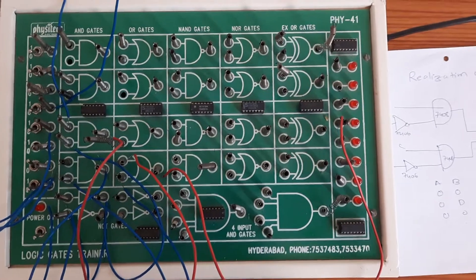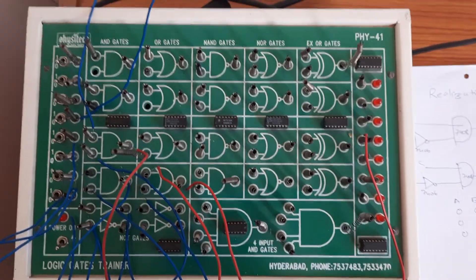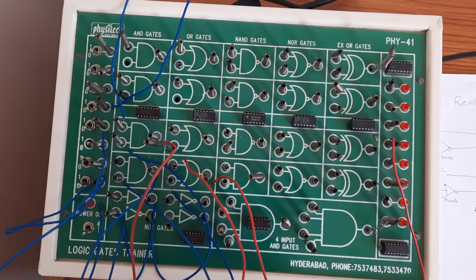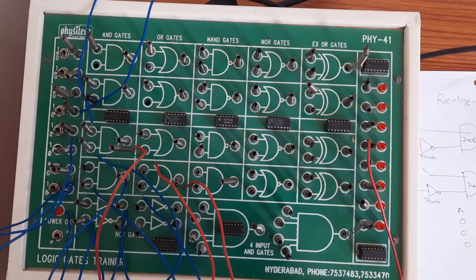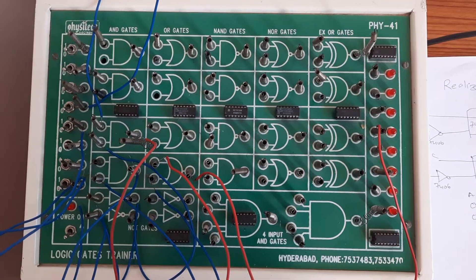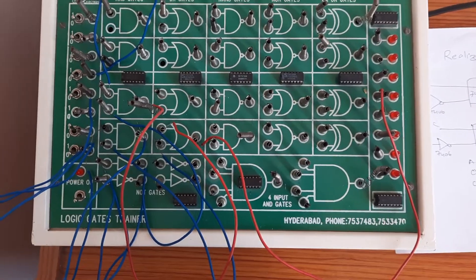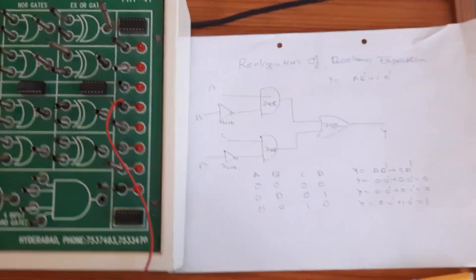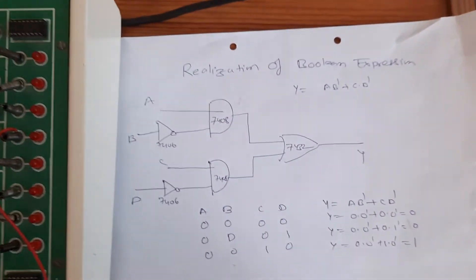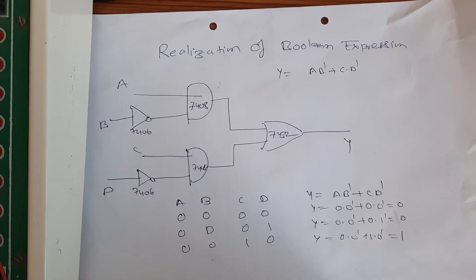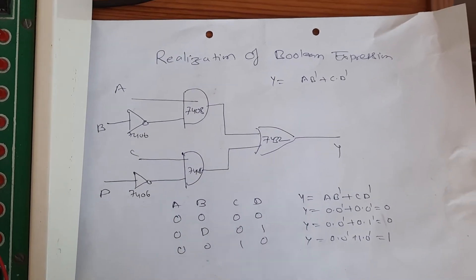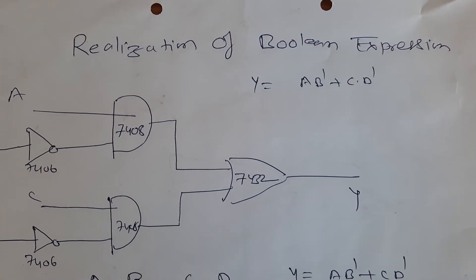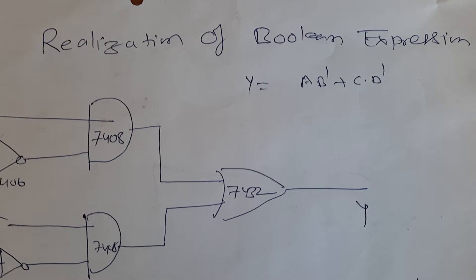Good morning everyone, this is Dr. Anil. Today we are going to see the experiment. The name of the experiment is the realization of Boolean expressions. So how do we realize the Boolean expressions? The aim of our experiment is to realize this expression: y is equal to A·B̄ + C·D̄. This is the expression given.